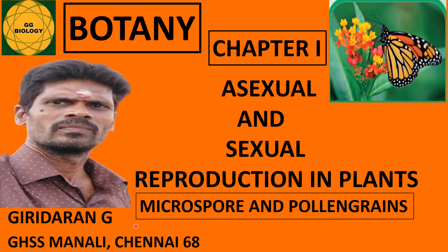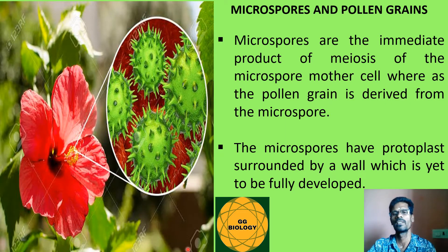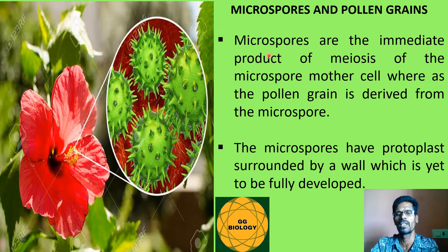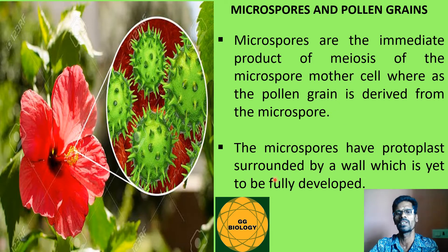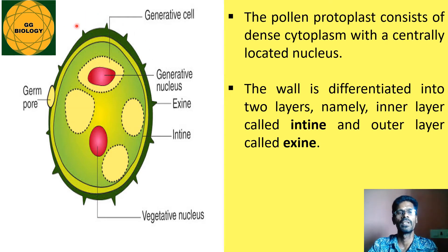Welcome everyone. The topic is microspores and pollen grains from Chapter 1 in botany, namely asexual and sexual reproduction in plants. The microspore mother cells of the anthers undergo meiotic division to produce microspores, which later get transformed into pollen grains. The protoplast of the pollen grains is surrounded by a wall which is yet to be fully developed, as shown in this picture.